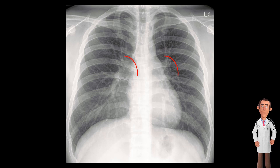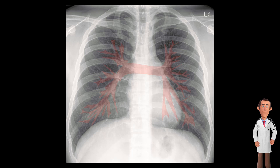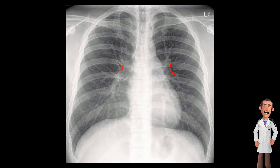Next, the lung hila. These are the faint structures you see around and behind the heart. The hila consists of pulmonary blood vessels, main bronchi, and lymph nodes. Lymph nodes are typically not visible in a normal chest x-ray. There is also an indentation on each side called the hila point.